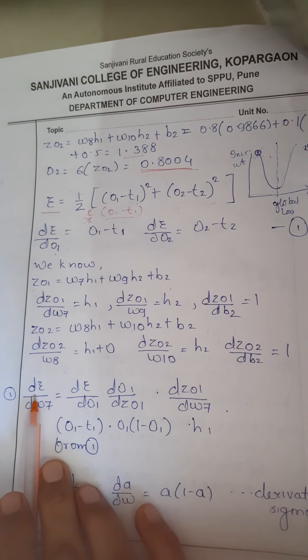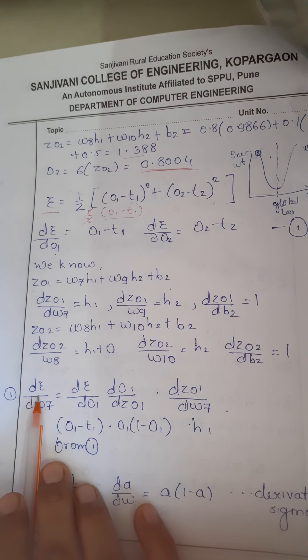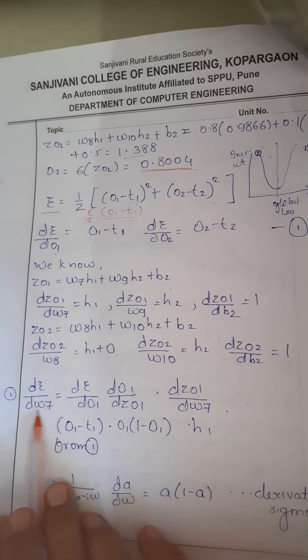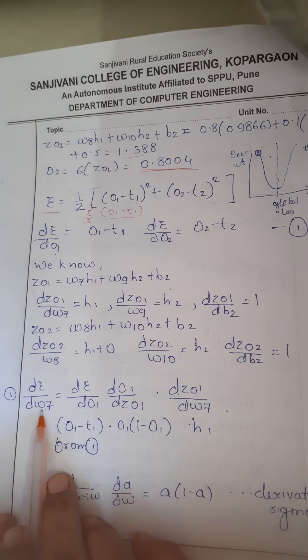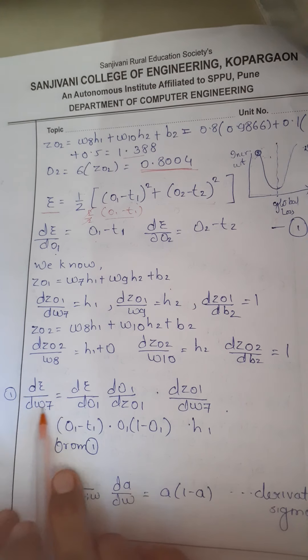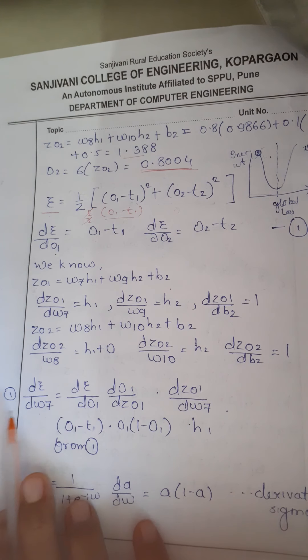Here we are continuing — this is the second part of our backward propagation. We were talking about this. So as we have seen, we have to find error with respect to dW7. This is the first thing we have to compute.